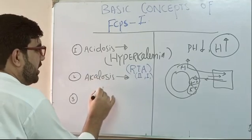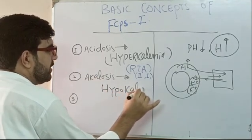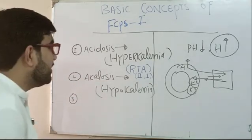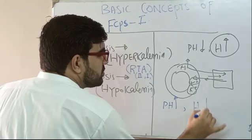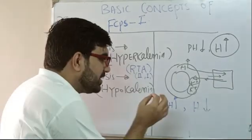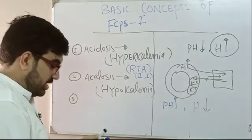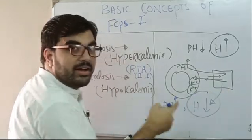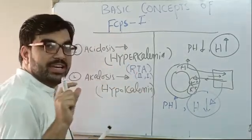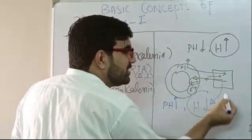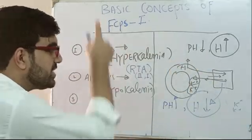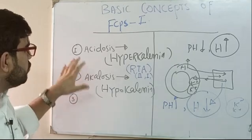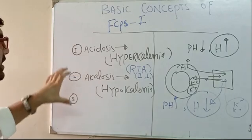Alkalosis always causes hypokalemia. How? The same mechanism in reverse: pH goes up, so hydrogen ion concentration goes down because they are inversely related. To replace the hydrogen ions lost from blood, hydrogen must come out of the cell. To maintain electrical neutrality, when hydrogen comes out, potassium goes in. When potassium goes in, it causes hypokalemia. These two MCQs — acidosis causing hyperkalemia and alkalosis causing hypokalemia — frequently confuse candidates.